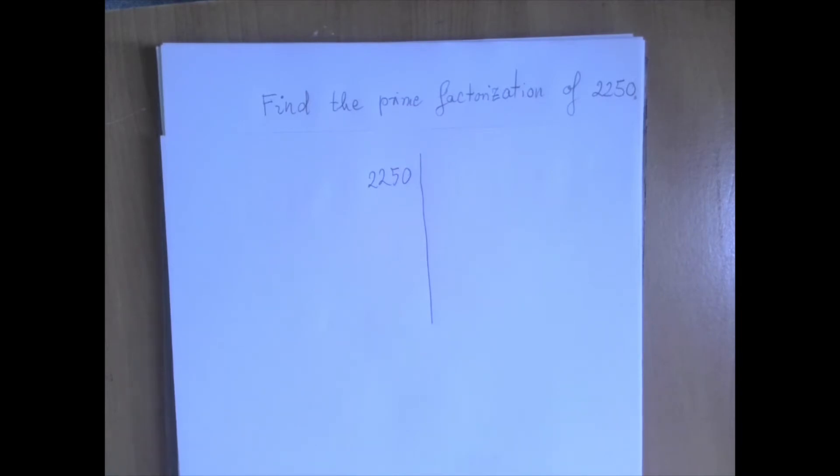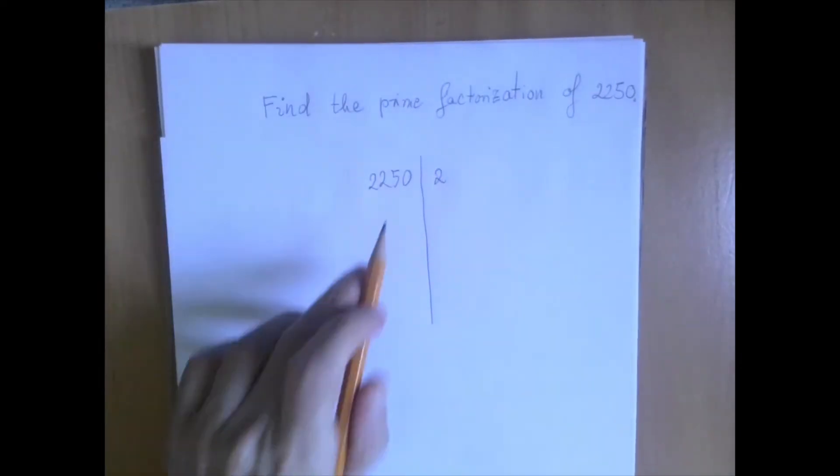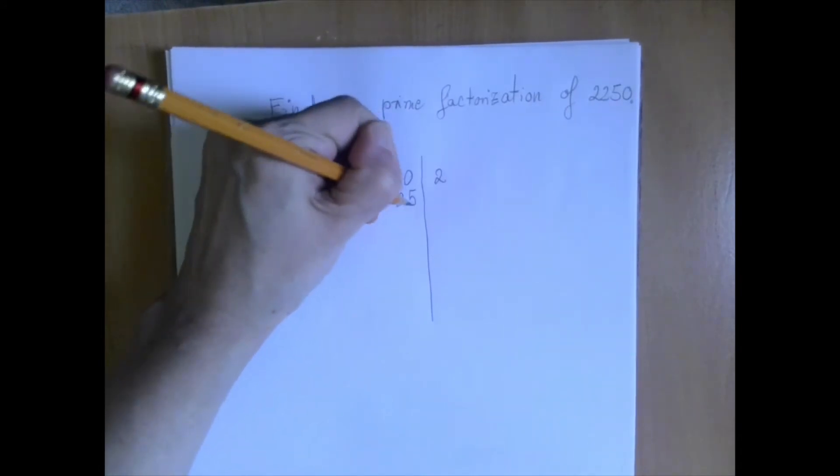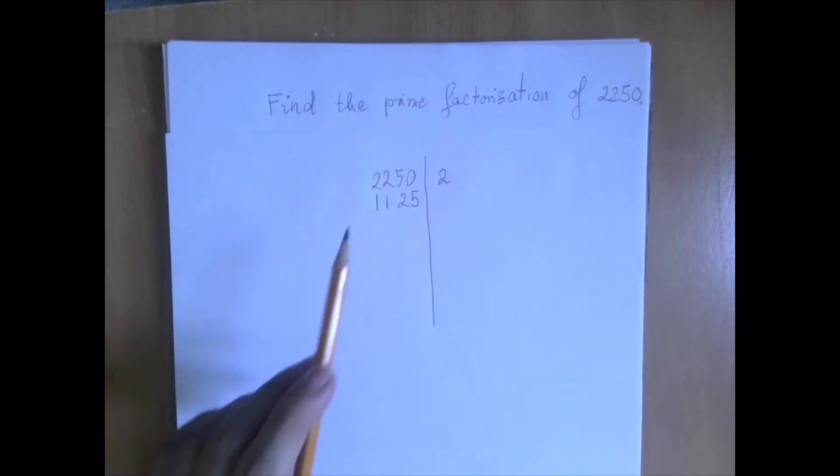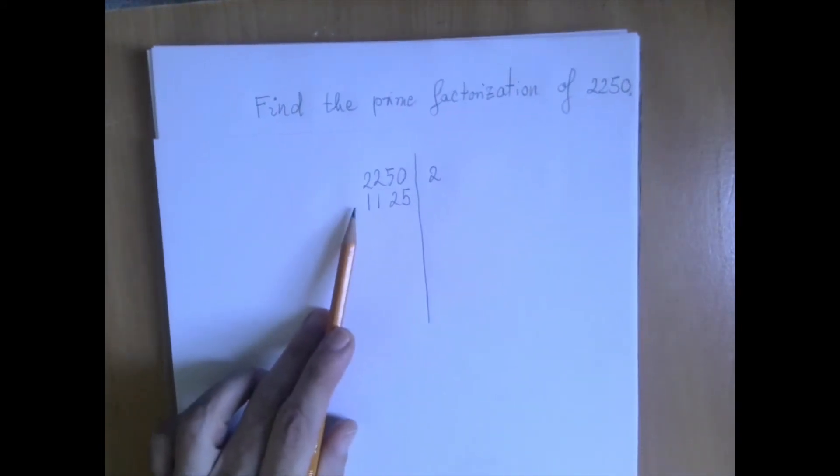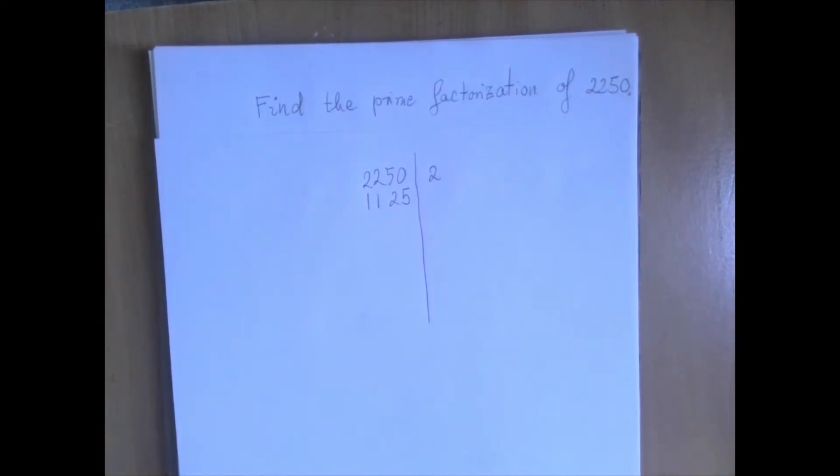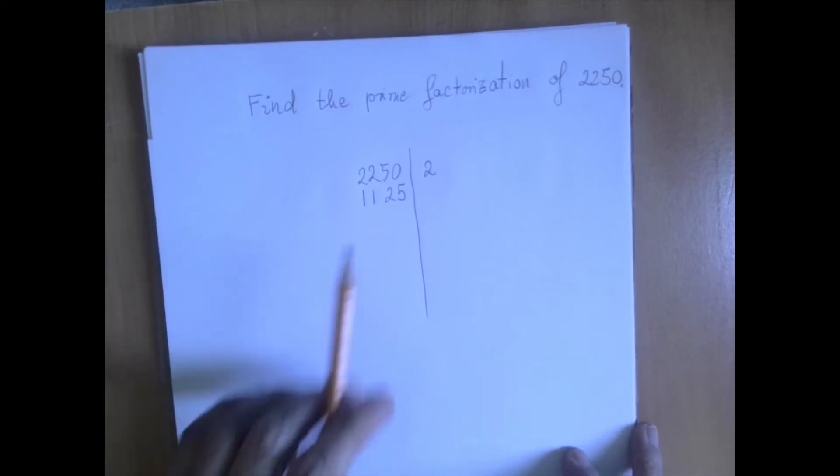The smallest prime number is 2. So we ask, is this number divisible by 2? The answer is yes. We write down this 2, and we divide this number by 2. That's 1125. Now the idea is that we're going to find a prime factorization of 1125, and we will throw in an extra 2. So we reduce the problem to a smaller one.